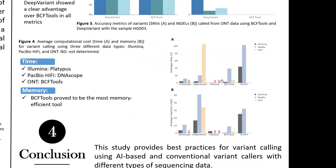For computational cost in terms of time and memory, Platypus was the fastest using Illumina data, DNAscope was fastest for PacBio, and GATK was fastest for Oxford Nanopore. However, in memory consumption, GATK proved to be the most memory-efficient regardless of which sequencing technology was used.